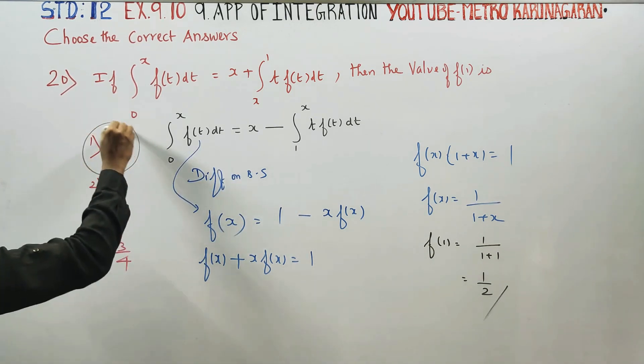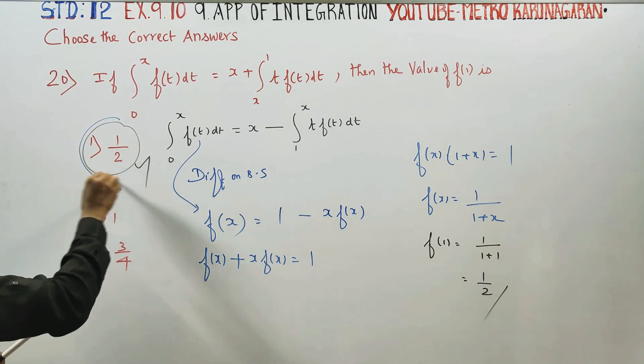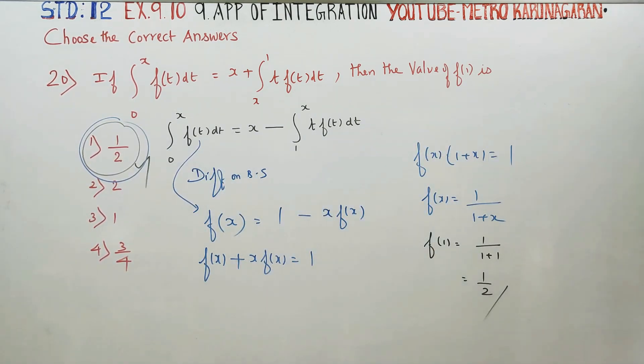1 by 2 is the best option for this sum. Option 1 is the correct answer. Thank you. 1 by 2 is the correct answer.